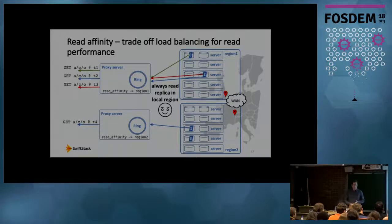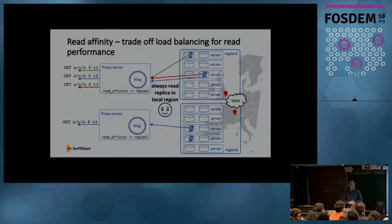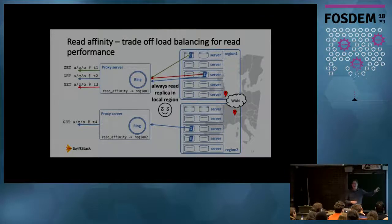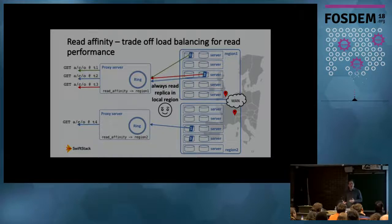We've seen that relatively simply, Swift can handle a distributed service — we annotate devices with region information, the ring operates much as it would for a single-site cluster, and read affinity optimizes for data locality. But we should consider the fundamental difference: we now have a wide area network in the middle of our storage pool. With a single site, it's reasonable to assume low latency, high bandwidth, reliable networking between all nodes. That assumption may not hold with a WAN connection between regions.